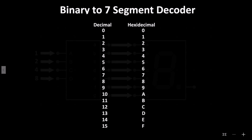Hexadecimal is a base 16 numbering system. The numbers are the same as decimal from 0 to 9, then 10 through 15 are replaced by A through F.